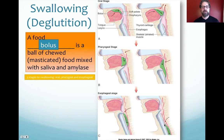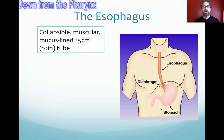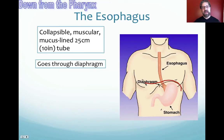Swallowing is a fast process, but you typically stop breathing for one to three seconds during it because we don't want food going into the wrong tubes. The esophagus carries food to its next location — it's collapsible, muscular, and lined with mucus, about 25 centimeters or 10 inches long. It travels through the diaphragm, a muscular sheet that aids in breathing, which has a central hole for the esophagus to pass through.